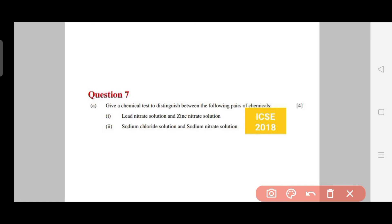Now this is another question from ICSE 2018 paper and I will recommend you to do this type of question because this is the most famous and most common type of question which is asked from this chapter. See the question: Give a chemical test to distinguish between the following pair of chemicals - lead nitrate solution and zinc nitrate solution. I will also show you the answer for this, but first let me read the question. The second question is: sodium chloride solution and sodium nitrate solution. So how can you distinguish between sodium chloride and sodium nitrate?